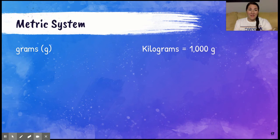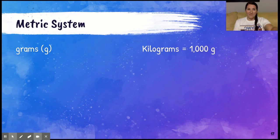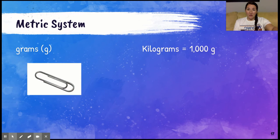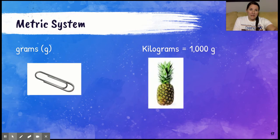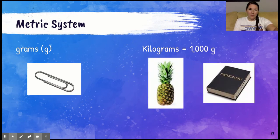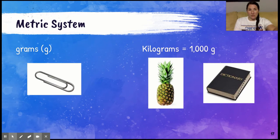Finally, let's look at the metric system. Within the metric system for mass, we're going to focus on grams and kilograms. A gram, kind of like a milliliter, is very small — a gram weighs about the same as a paperclip. Then 1,000 grams equals one kilogram. A kilogram would be about how much a pineapple weighs, or think about a big hardcover dictionary — that would be about a kilogram. Keep those in mind as we do some practice.